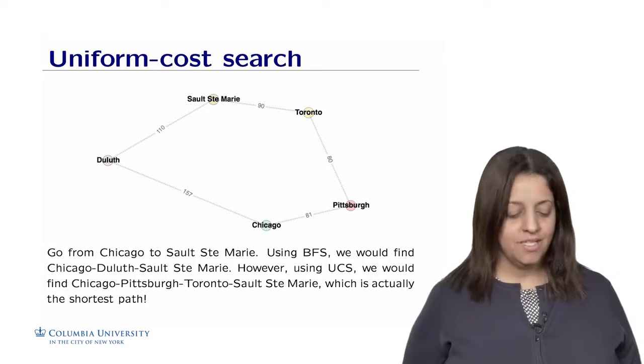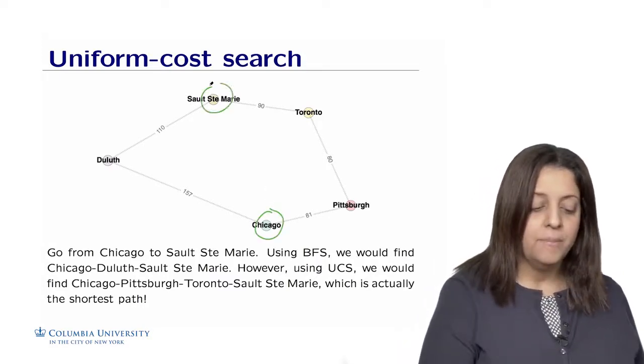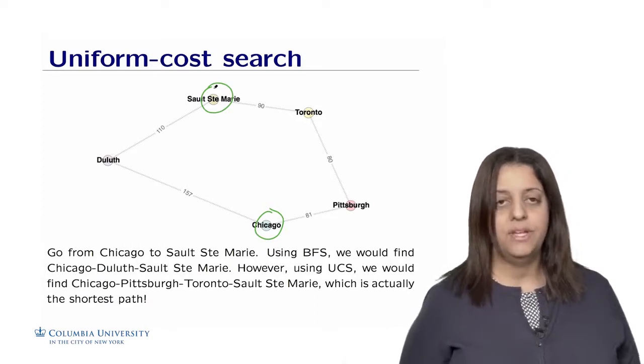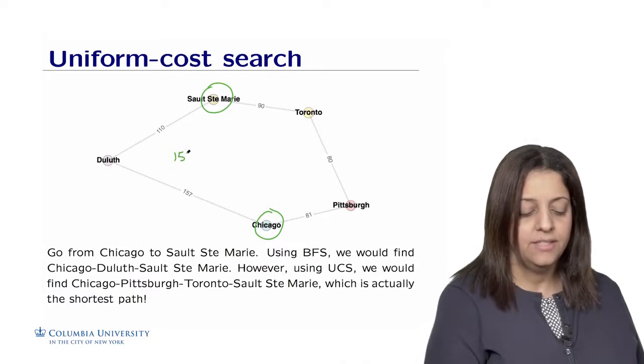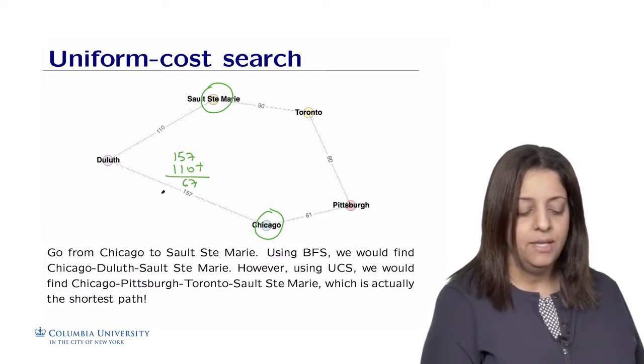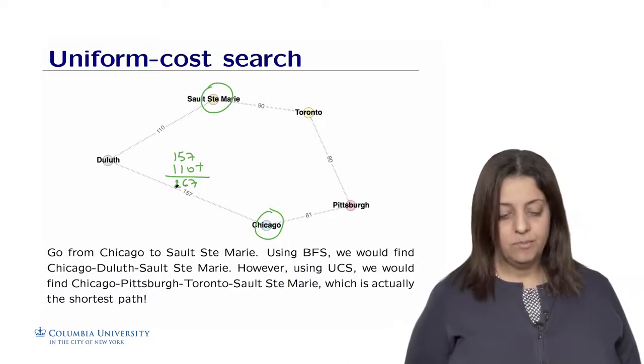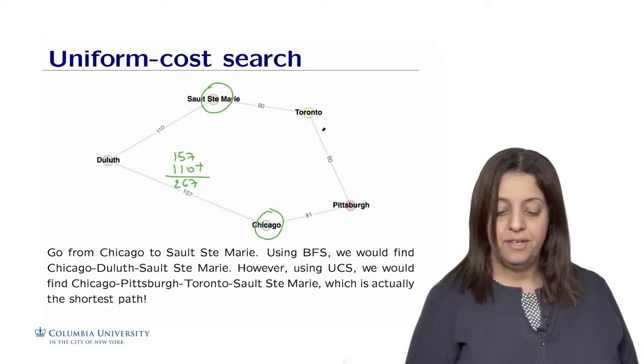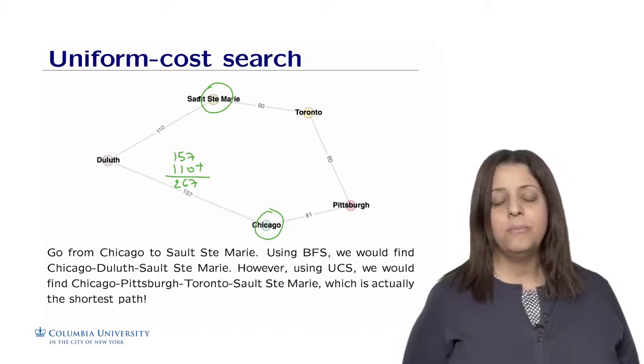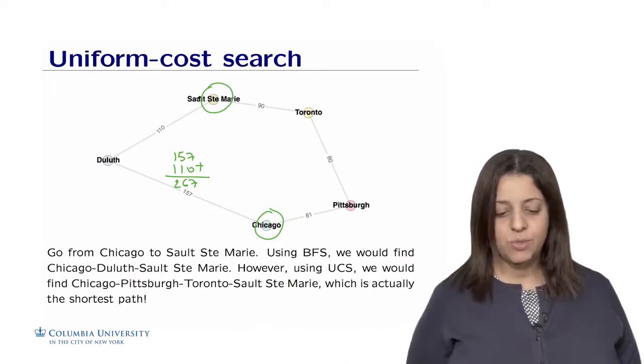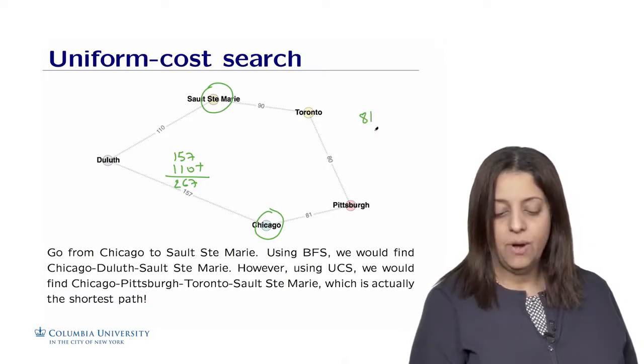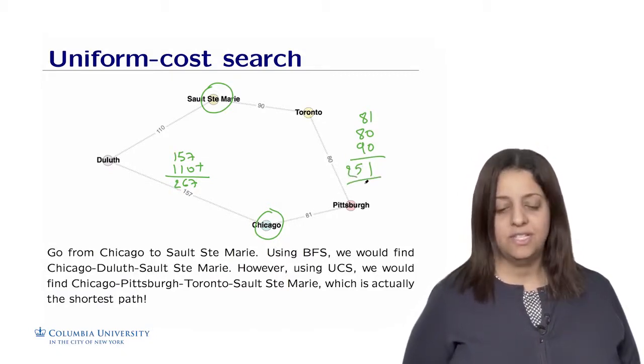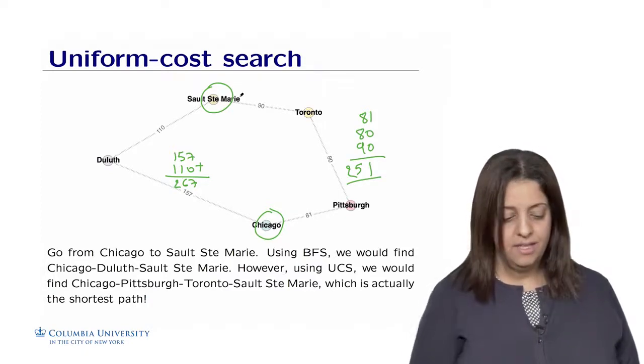To fix the idea, suppose we want to go from the city of Chicago to the city of Sault Ste Marie. If we do a BFS, we are going to find this two-step solution, which goes from Chicago to Duluth, from Duluth to Sault Ste Marie. The cost of this solution is 157 plus 110, so we need to spend 267 kilometers to get from Chicago to Sault Ste Marie. If we use a BFS modified by cost, which is uniform cost search, we are going to rather pick this path here, which is Chicago, Pittsburgh, Toronto, and Sault Ste Marie. This is a path of size three, which will not be picked by BFS, but UCS will pick it because the distance or cost for this path will be 81 plus 80 plus 90, which makes a solution of 251, which is cheaper than 267. So UCS will pick this second path here rather than the other path.